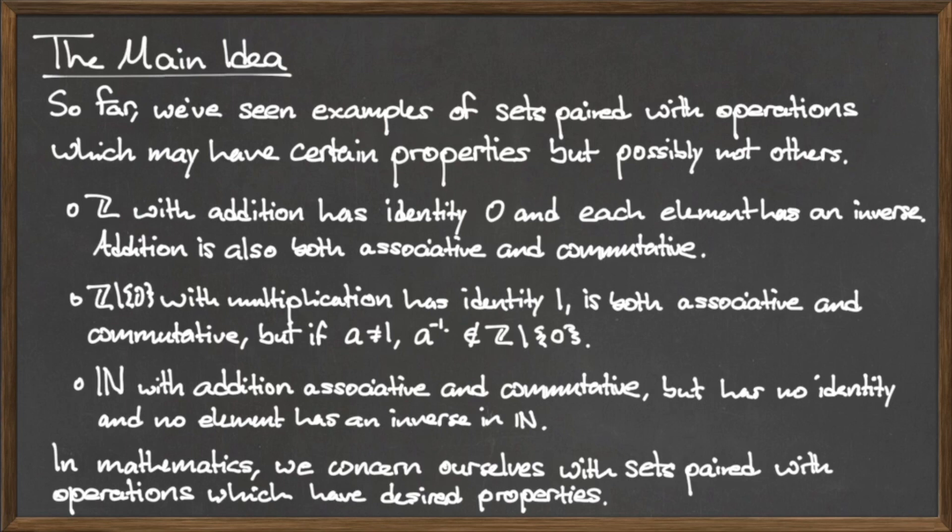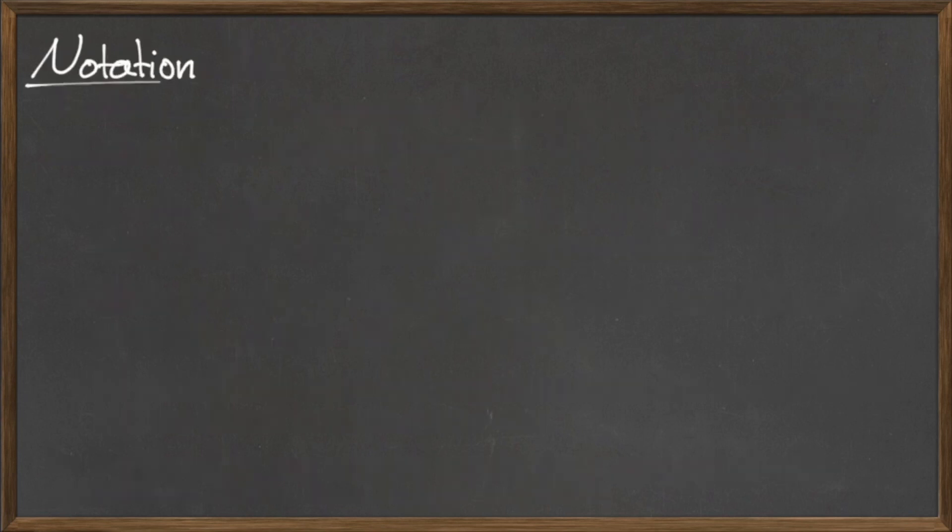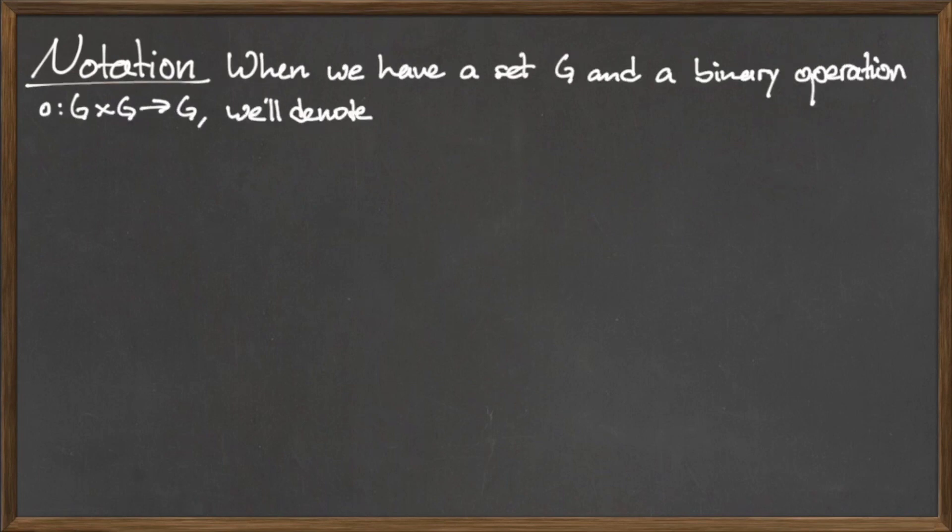Knowing about these sets and their binary operation pairs, we can now define a very important quantity in mathematics, the group. Let G be a set paired with a binary operation dot from G cross G to G. Denote this set binary operation pair by G dot.